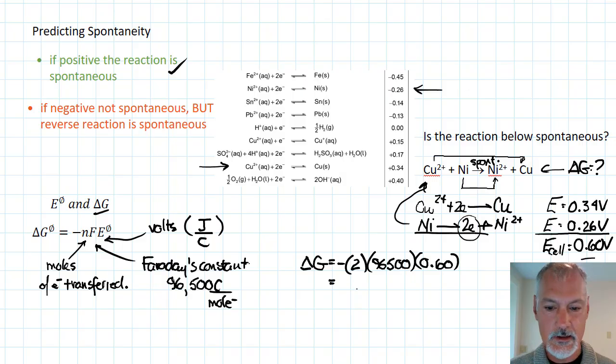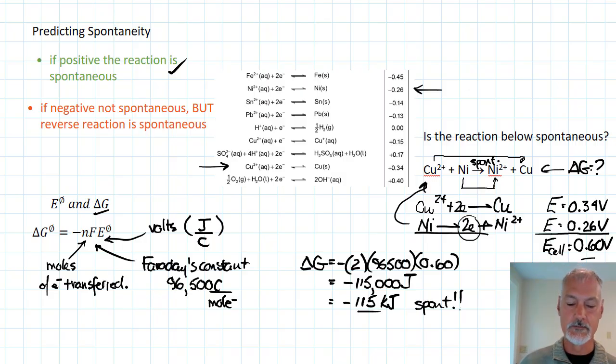Multiplying this through, I get a value of negative 115,000, and that would be joules. Now, converting that to kilojoules, negative 115 kilojoules. Which we notice, in this particular case, delta G being negative, is our key to a spontaneous reaction.